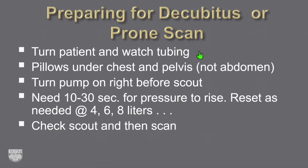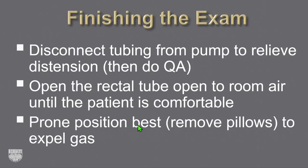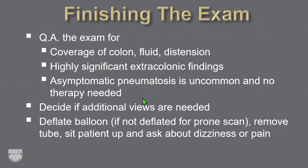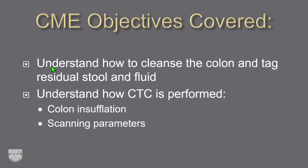Prepare for the decubitus view — some put a pillow under chest or pelvis; that's optional. When finishing the exam, don't rush to pull the tube out. Disconnect from the pump, drop it to the floor, let gas come out, and let the patient turn prone to help gas evacuate. Then QA the scan for coverage, extra-colonic findings, and any asymptomatic pneumatosis — which is rare and not a problem. Decide if additional views are needed and check that the patient is comfortable.